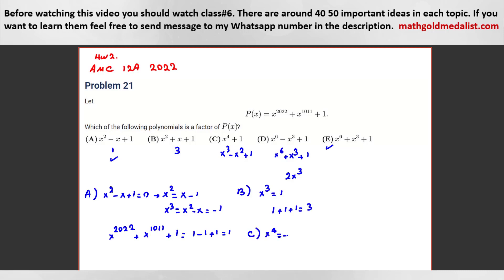For C, x to the 4 is negative 1. So the first term is negative 1 to the power of 2020 over 4, because x to the 4 raised to the power of this times x squared plus x cubed times x to the 4 is negative 1 to the power of 1008 over 4, plus 1. Calculating: negative 1 to the power of 505 is negative x squared. This one will be 252 positive plus x cubed plus 1. So it is completely correct. Good job.